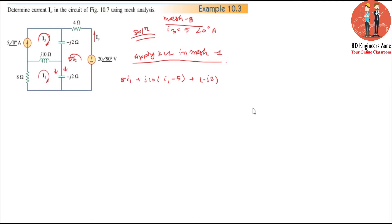We identify mesh currents I1 and I2. Writing the KVL equation for Mesh 1: 8i1 plus j10·i1 minus j50 plus minus j2·i1 plus minus j2·i2 equals 0.